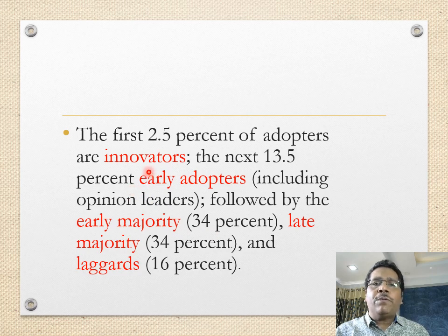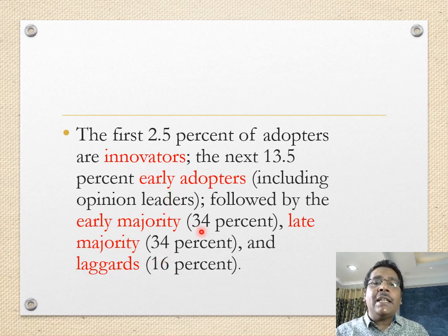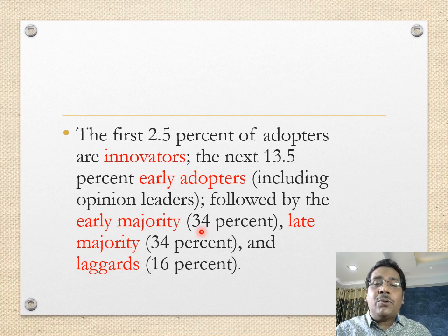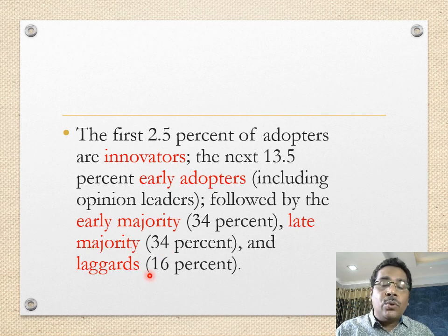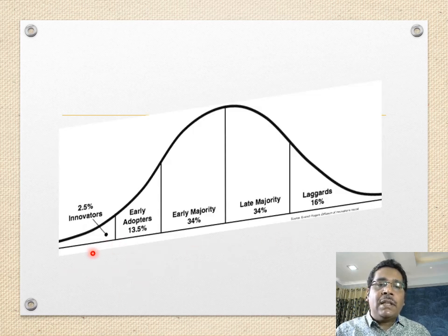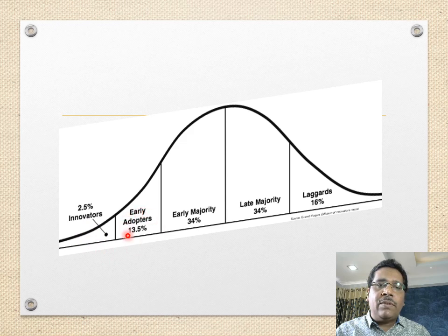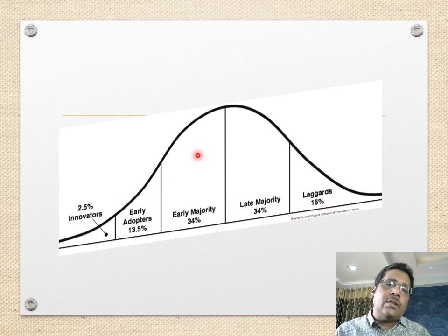The first 2.5% of adopters are the innovators — for example, if there are 200 adopters, the first five are innovators who are always willing to try out new ideas. The next 13.5% are early adopters, who include opinion leaders. Then we have an early majority of about 34%, a late majority of 34%, and finally the laggards. This produces the famous bell curve — the innovators and early adopters together make up about 16% who kick-start the process.